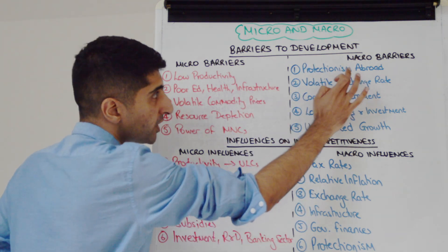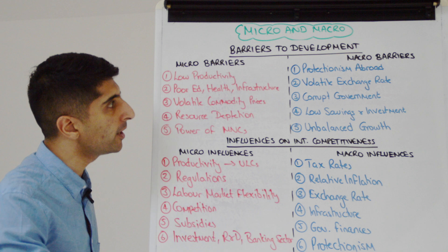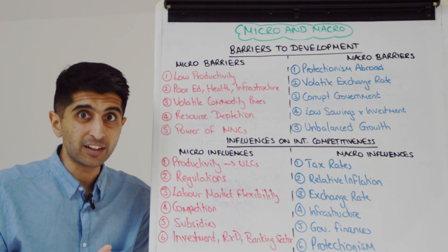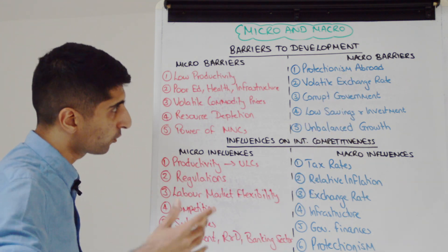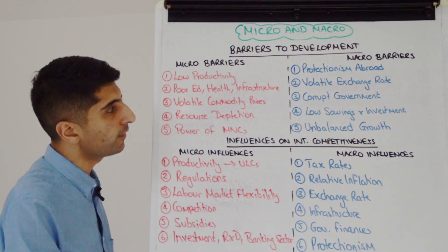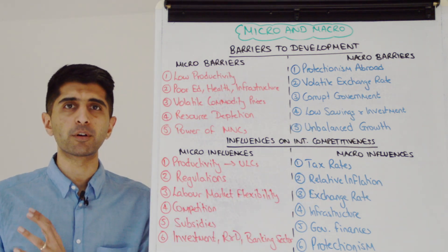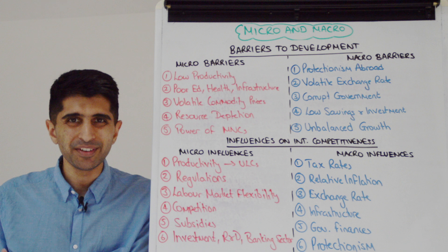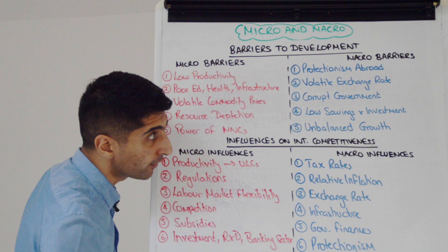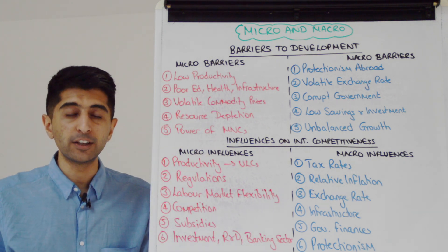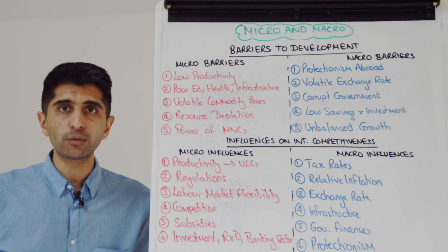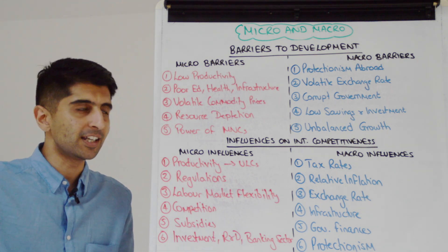What about macro barriers to development? Protectionism abroad is an issue if a country is export-dominant. Volatile exchange rates keep trade away, keep FDI away, and potentially keep aid away. Corrupt governments are a massive problem in terms of how they use tax revenue and how efficient they are with government policy. Low savings is a massive problem — it means a lack of investment, which can really hinder economic growth and development outcomes. Unbalanced growth and over-specialisation mean that a shock or a fall in international commodity prices can lead to a shock recession and a major barrier to sustained development.